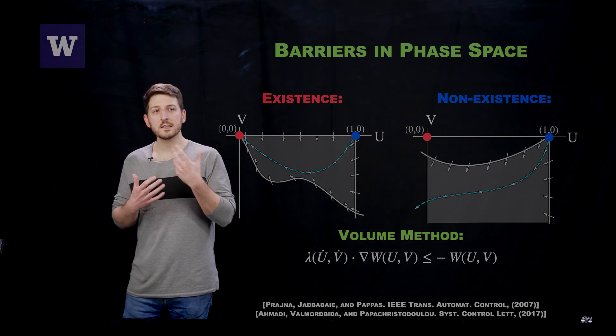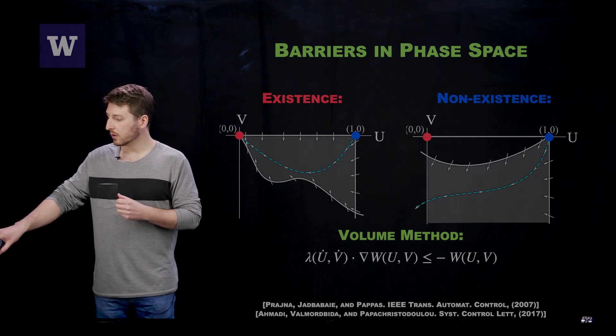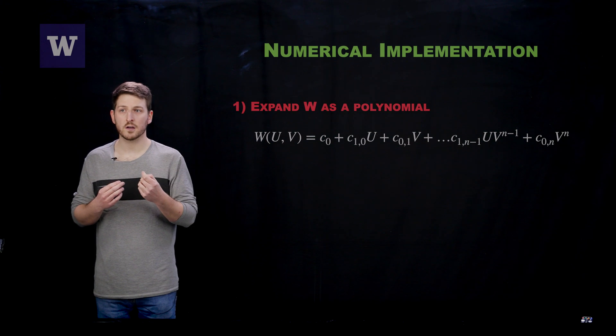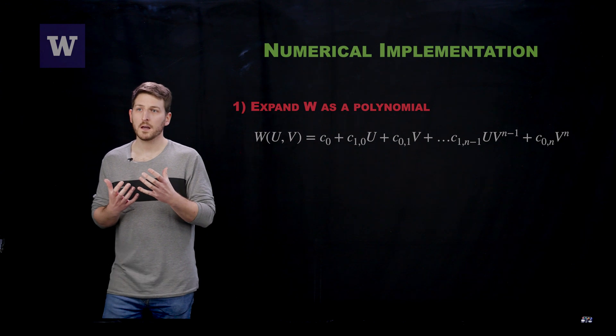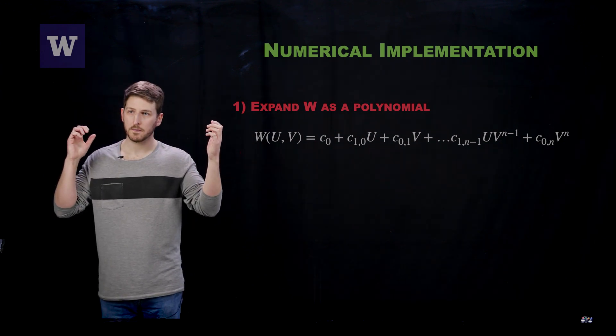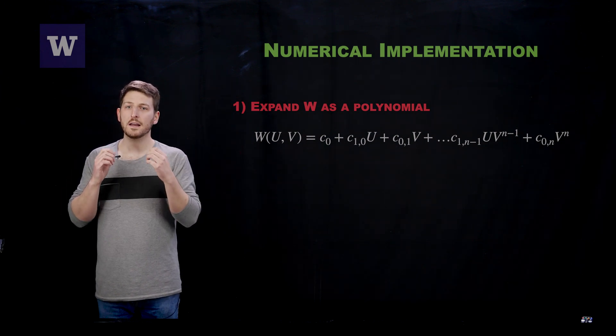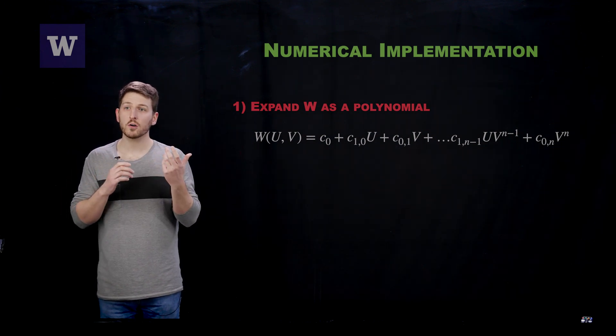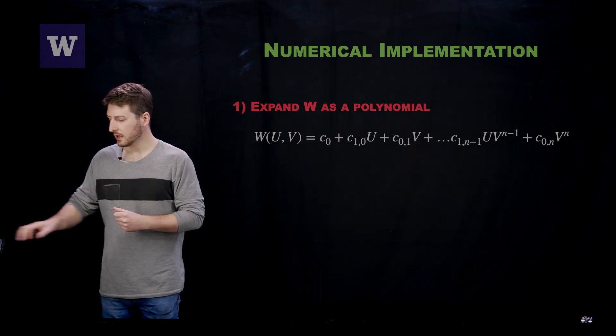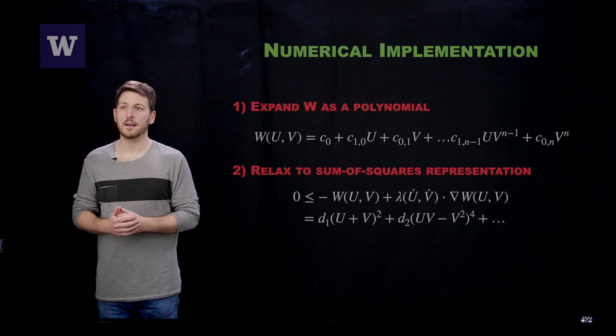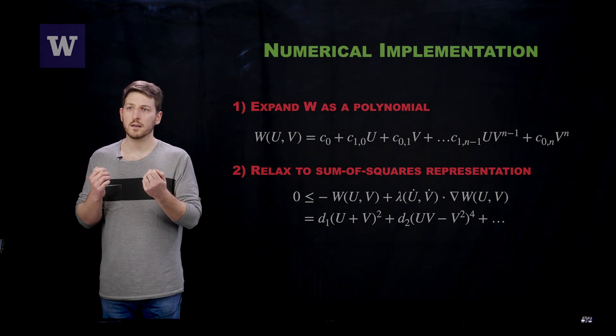This is still a fairly technical task even though it is a convex relaxation. Therefore, the numerical implementation takes advantage of a number of modern numerical techniques. The first thing that we are going to do is expand W as a polynomial. This will allow us to tune the coefficients of that polynomial in an effort to confirm the necessary inequality to satisfy the volume method. Unfortunately, when you rearrange that inequality, you arrive at tuning the coefficients in such a way that you essentially have a polynomial and you need to confirm that it is non-negative on a certain set.